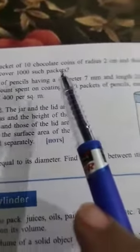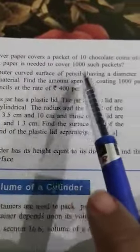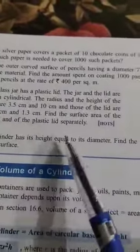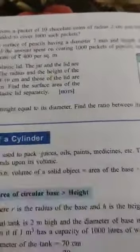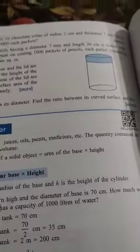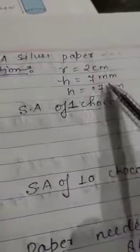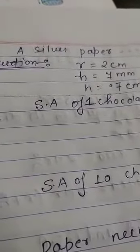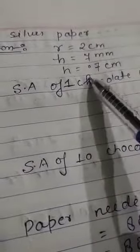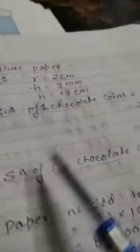Now question number 13. A silver paper covers a packet of 10 chocolate coins of radius 2 cm and thickness 7 mm. How much paper is needed to cover 1000 such packets? The thickness means height = 7 mm. We convert: dividing by 10 we get 0.7 cm. Now we find the surface area of one chocolate coin.